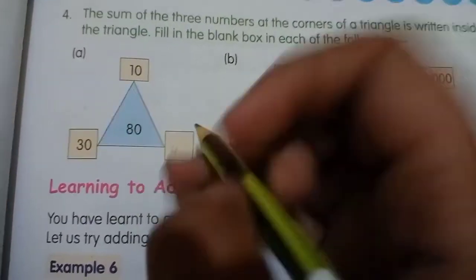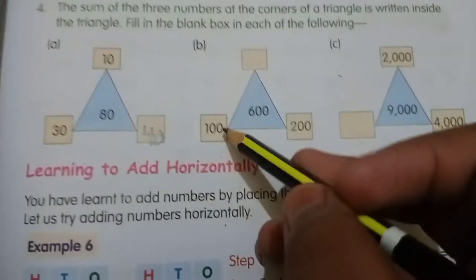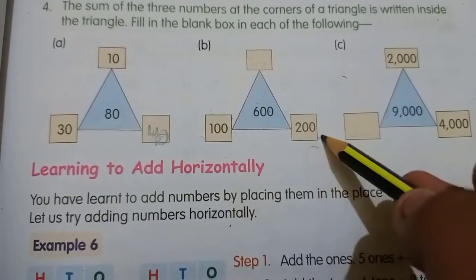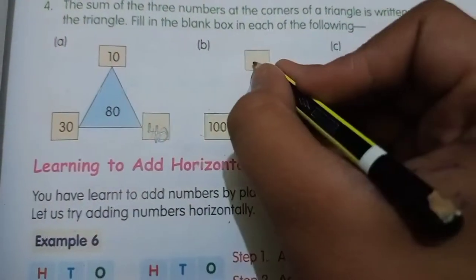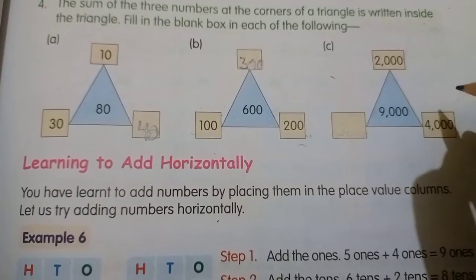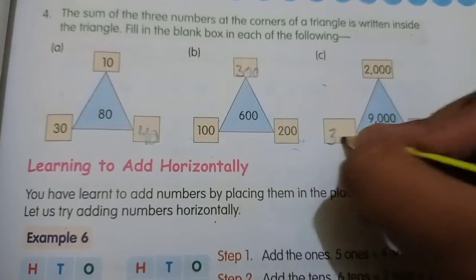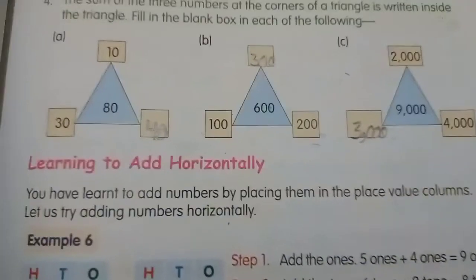80 means minus karne par 40 jo aayega 40, toh yahan par likh denge 40. 600, ab sabse bade 100 plus 200, 300. 600, 300 minus kiye, yahan par aayega 300. Ab 4000 and 2000 ke jodne par aayega 6000. 9000 mein se minus kar 6000 aayega 3000.